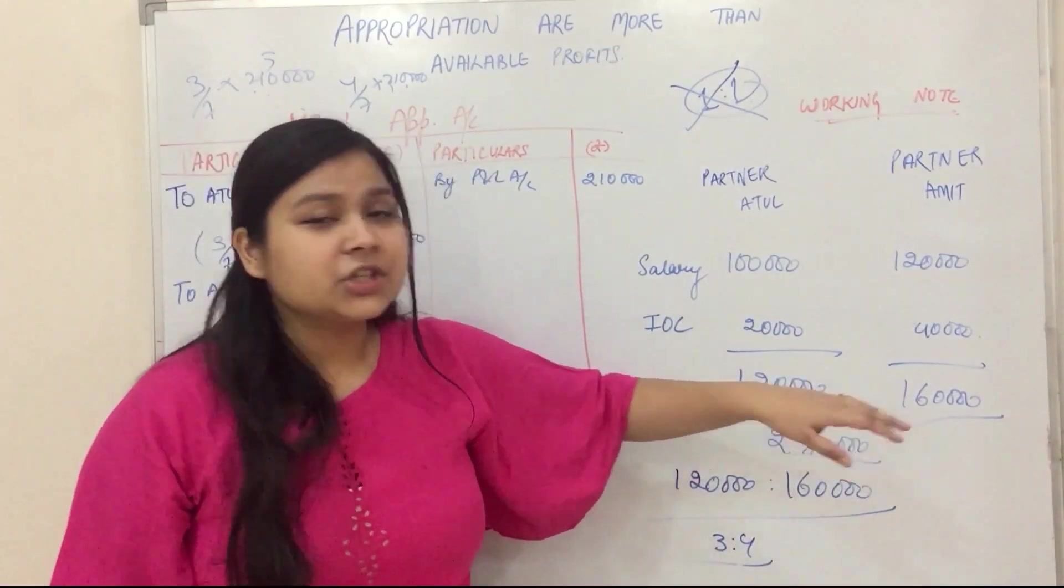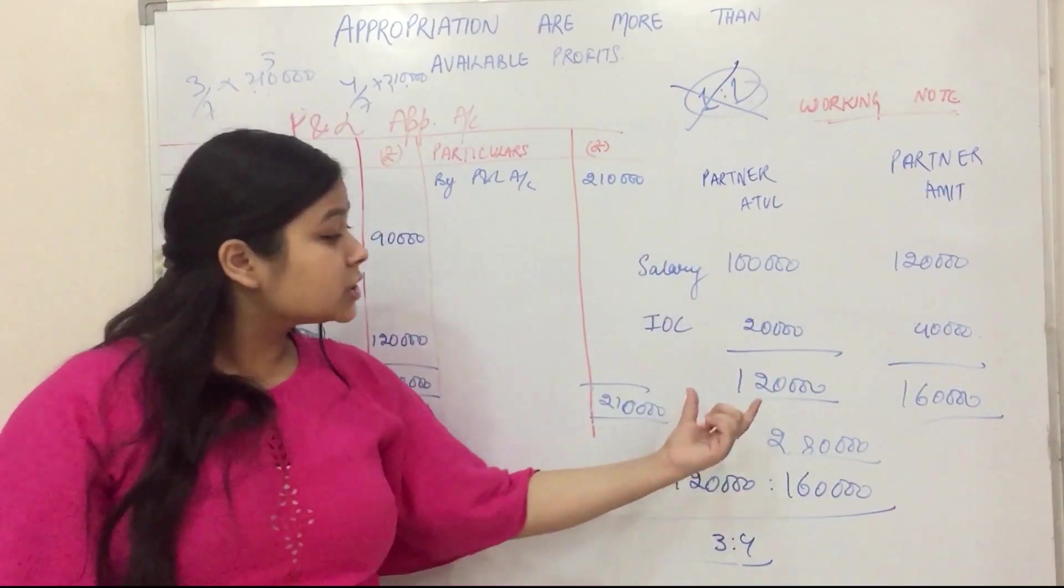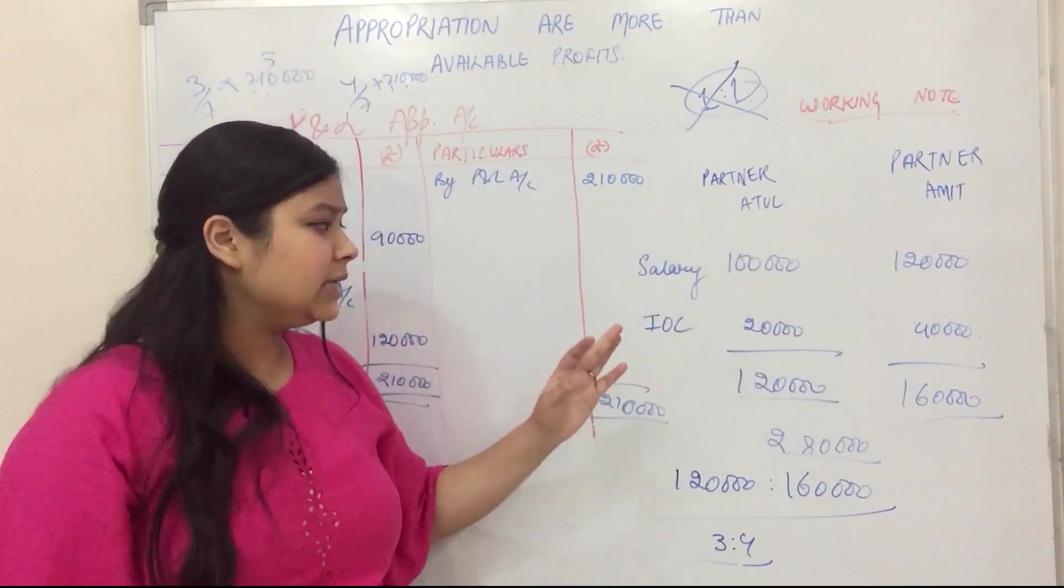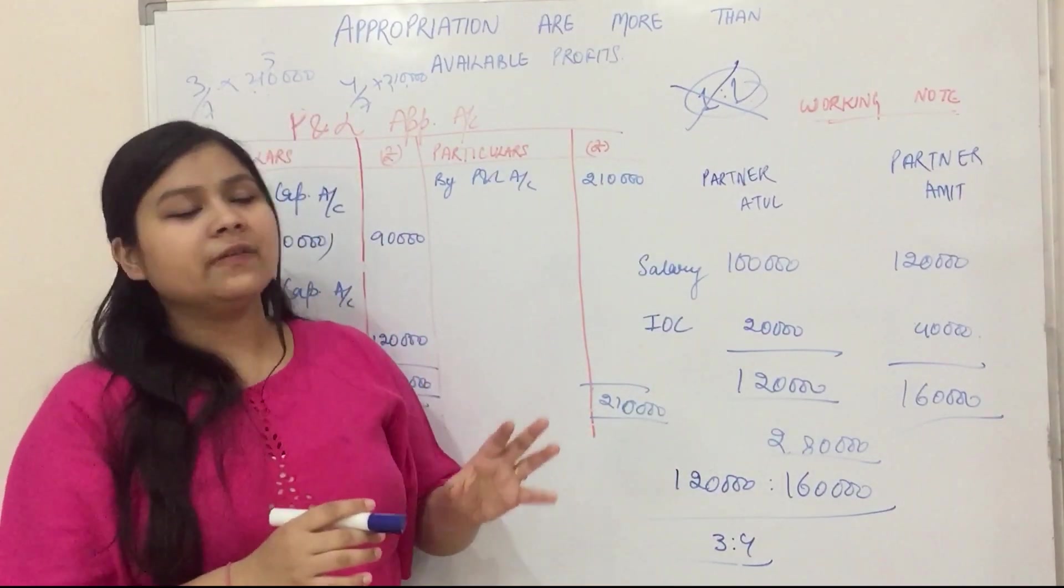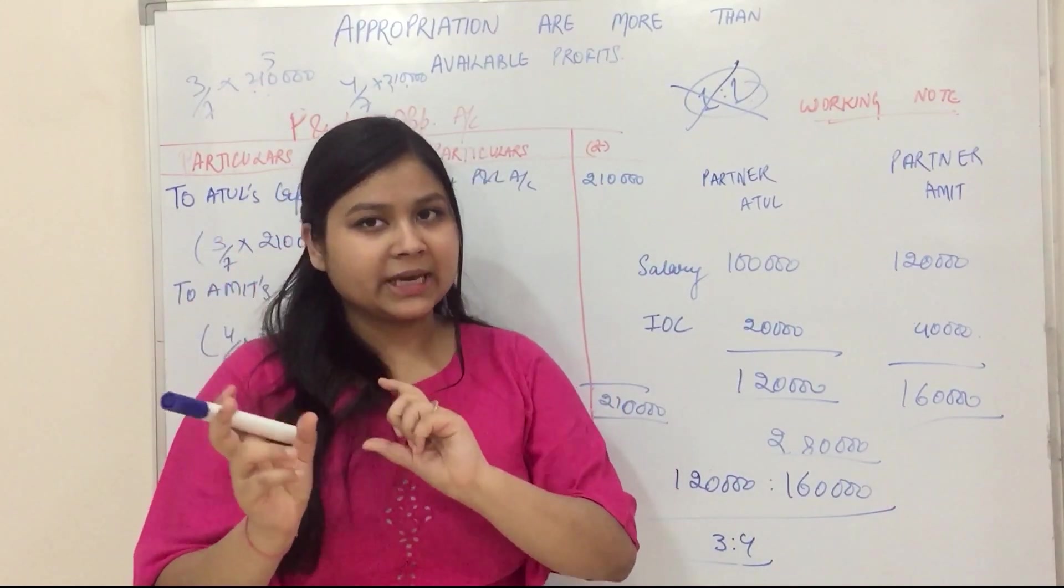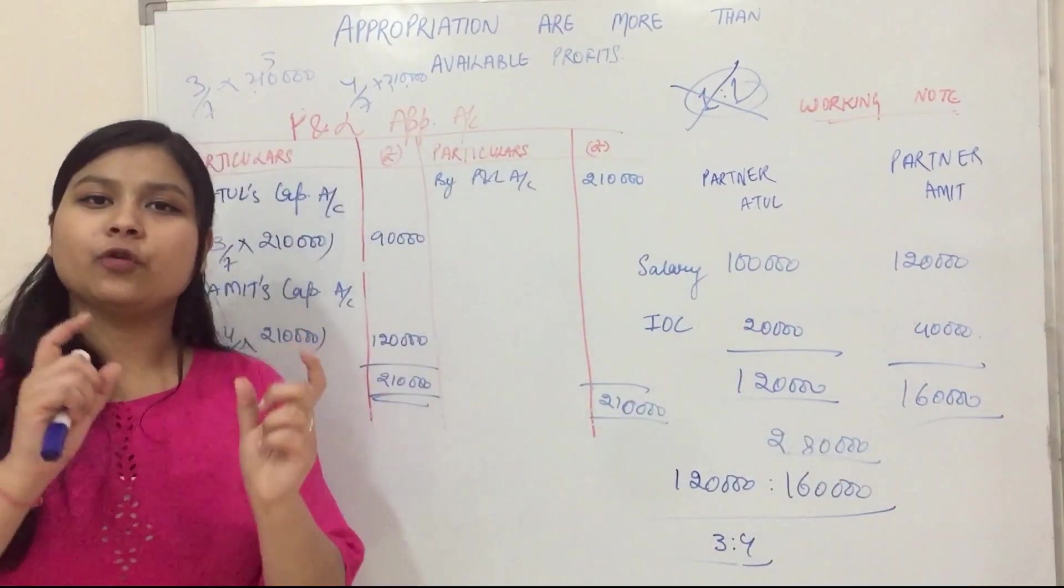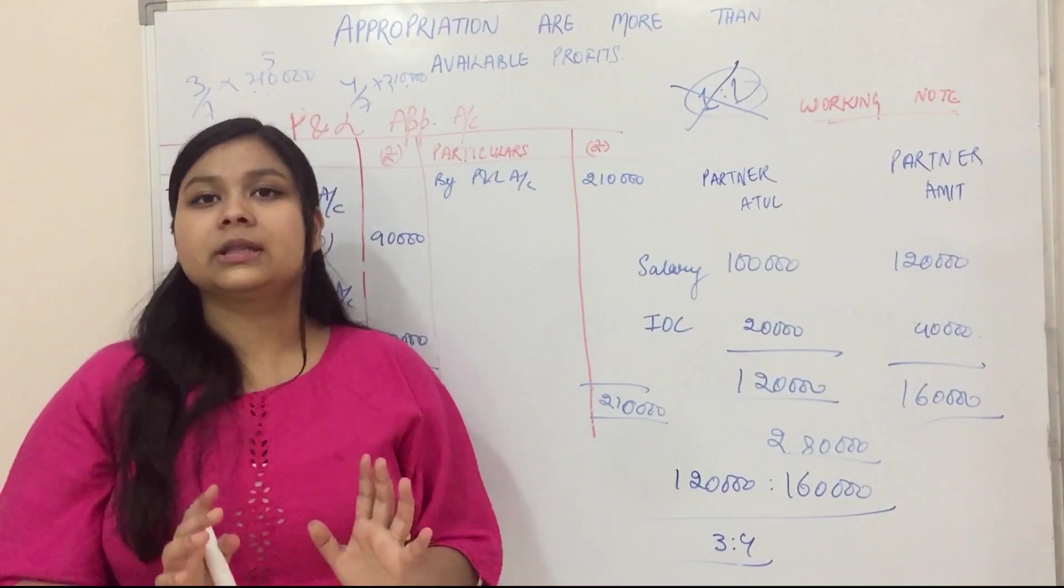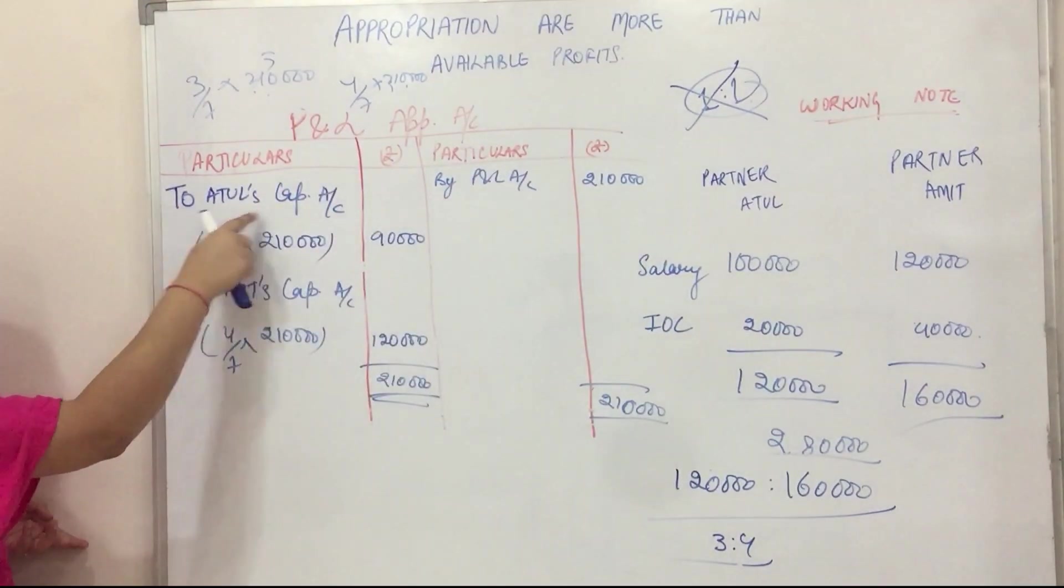In these cases, the amount we have to give to our partners. We want to apply all the expenses: salary, interest on capital, and commission. We want to give them everything. So we will distribute our profit in this ratio. That will be 3 is to 4. So we will transfer this to Atul's capital account.